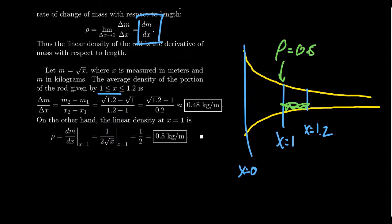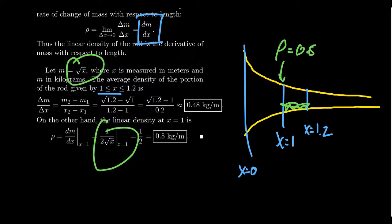This analysis is very similar to the velocity problem from chapter two, where average velocity approximated instantaneous velocity. The difference now is that the derivative calculation is no longer the hard part — we simply apply the power rule. This is the true power of chapter three: we can now compute derivatives efficiently and use them to analyze real-world quantities like the linear density of a rod.